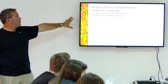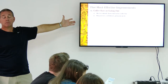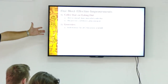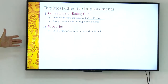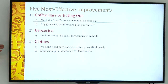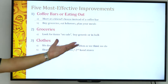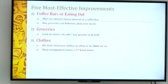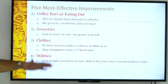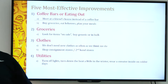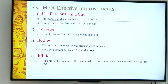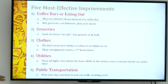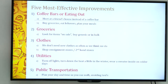Five most effective ways to improve your budget: coffee bars or eating out — do less. Groceries — look for things on sale or buy in bulk. Clothes — second-hand stores are a good place to shop. Utilities — turn the lights off everywhere you go; make it a game. Public transportation — plan your day so that you can walk more or accomplish multiple tasks while you're moving.